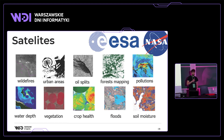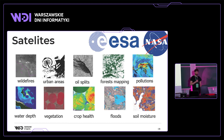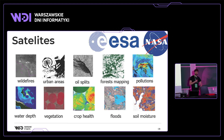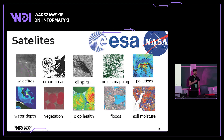We can also use satellites and machine learning in agriculture for detecting vegetation, measuring the size of crop fields, estimating food production from crop fields, measuring the health of plants, estimating soil moisture, and measuring flood size. For the past few months, my research focused on satellite tasks related to water estimation.